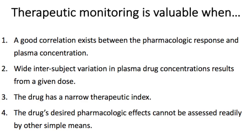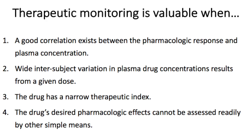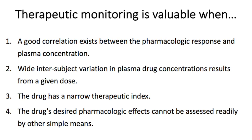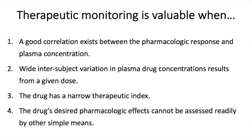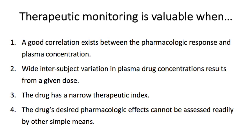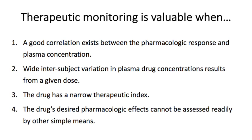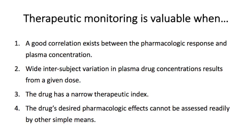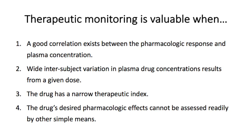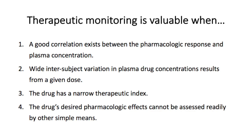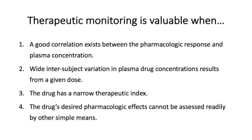So therapeutic monitoring, which can allow us to adjust dosage regimens to achieve target plasma drug concentrations, is valuable when a good correlation exists between the pharmacologic response and plasma drug concentrations, there is wide inter-subject variation in plasma drug concentrations resulting from a given dose, the drug has a narrow therapeutic index, and/or the drug's desired pharmacologic effects cannot be assessed readily by other simple means like simply measuring blood pressure or monitoring the consciousness of a patient.